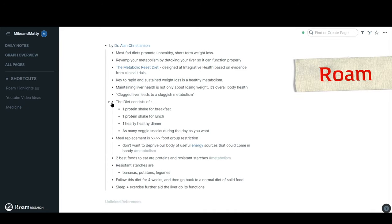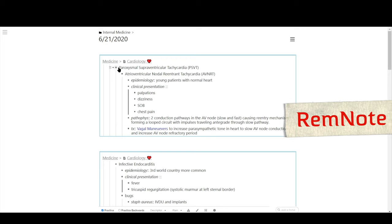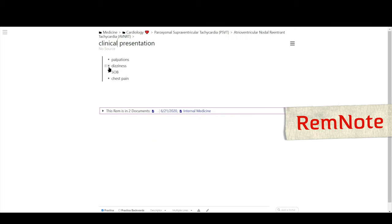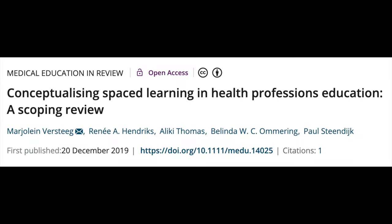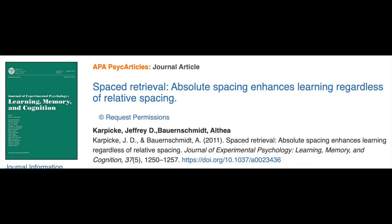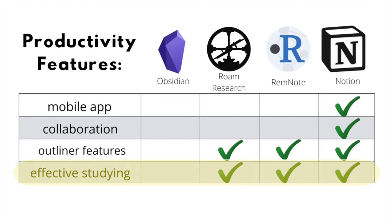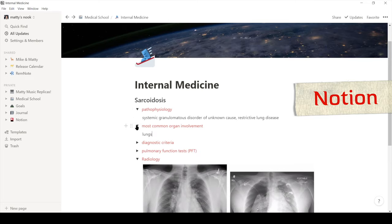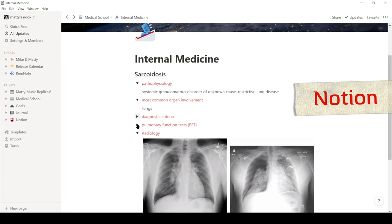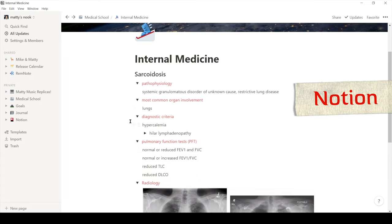Roam Research and RemNote take outliner features further by allowing you to expand your view of an idea into a new document by clicking on the bullet point. The last category is studying. All note-taking apps are great study tools, but some are much better than others — and this comes down to evidence-based learning, because active recall and spaced repetition are two of the best scientifically proven study strategies. You can't really implement these strategies easily using Obsidian. You can achieve active recall learning efficiently using Notion, Roam, and RemNote because they all have the ability to toggle bullets, so you can hide answers and practice recalling the information.